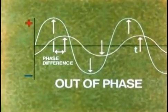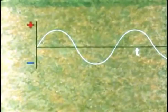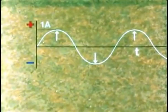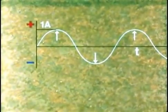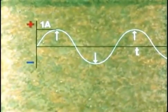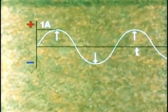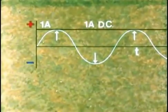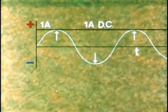There's one final thing we must know about AC. Suppose the peak value of this AC is one amp. It is only one amp at two instants during the cycle. So it will not provide as much power as a direct current of one amp, which is at one amp all the time.